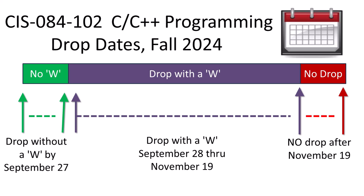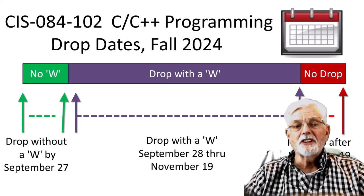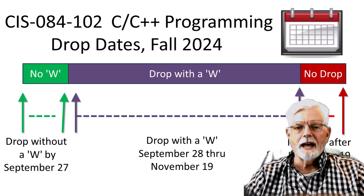The Java programming class is shorter in length than the C C++ programming class and has different dates for dropping. You can drop the CIS 84-102 Java programming class by September 27 and nothing will show on your transcript. If you drop by November 19, a W will show on your transcript. You are not able to drop the class after November 19. Note there is another full semester section of CIS 84-102 Java programming this semester with a different start date and different drop dates from the section I am teaching.